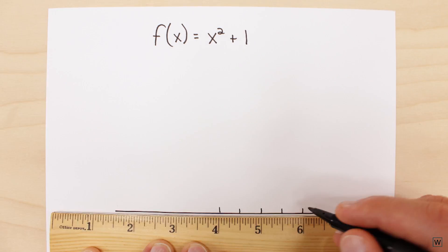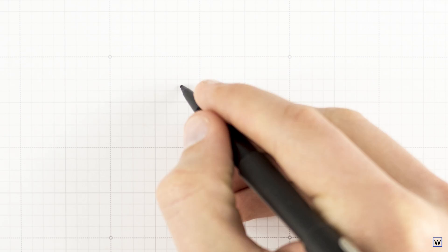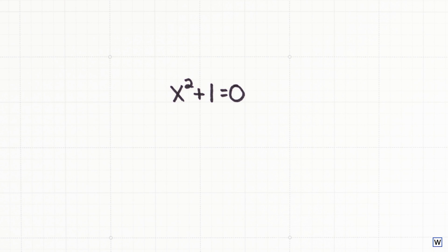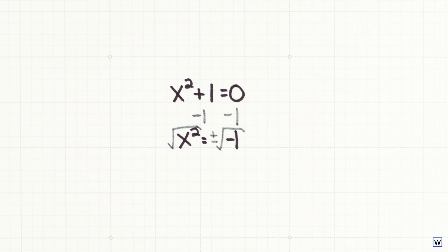We began our conversation in part 1 with an equation that appeared to have no solution: x squared plus 1 equals 0. And after all the work we've done so far, you can probably see how to find the answer algebraically. Subtract 1 from both sides of the equation and take the square root, resulting in x equals plus or minus i. Done.